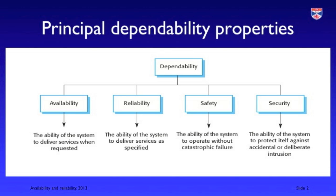I'm Ian Somerville and in this video I'm going to be talking about issues of availability and reliability. In a previous video I talked about the concept of dependability as a composite system property that's an amalgam of four other properties: system availability, reliability, safety, and security.